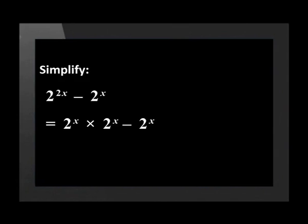Using the factorizing rules, we can take out a highest common factor. The highest common factor is 2 to the power of x. Dividing each term by this factor gives us 2 to the power of x, multiplied by the bracket 2 to the power of x minus 1.